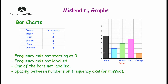Another thing: even though it starts at two, the spacing goes two, three, four, five, six with two squares each, but then it jumps to seven after only one square. So the spacing of those frequencies is inconsistent. To summarise: it doesn't start at zero, the vertical axis isn't labeled, and the spacing between numbers on the vertical axis isn't consistent — they should be equally spaced going up in ones or twos. Also, the bar for blue hasn't been labeled, which is another problem.